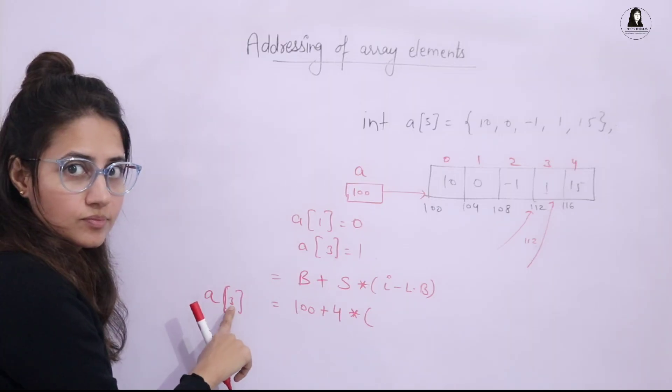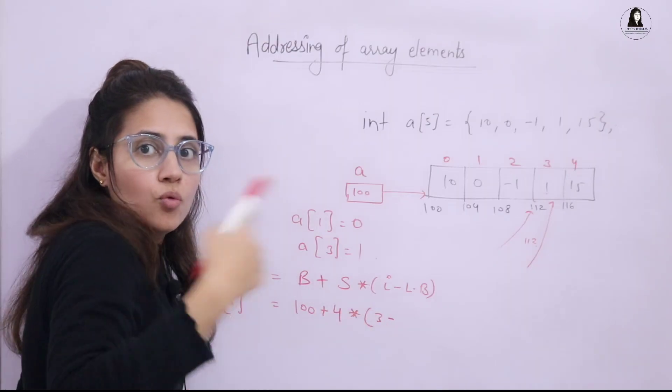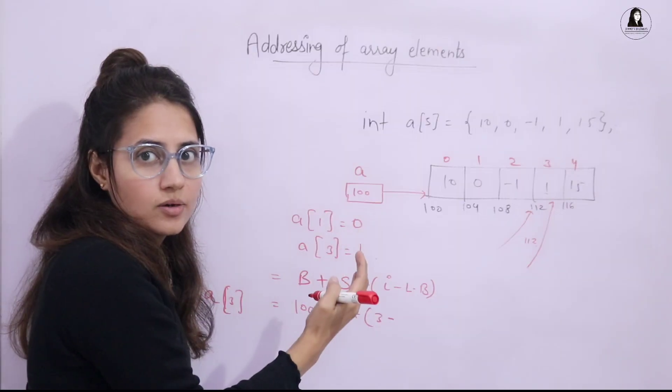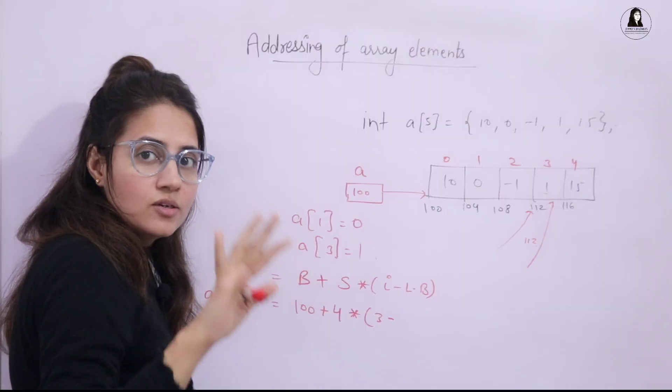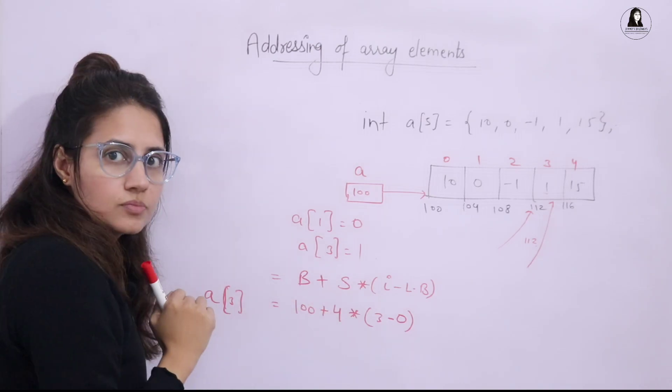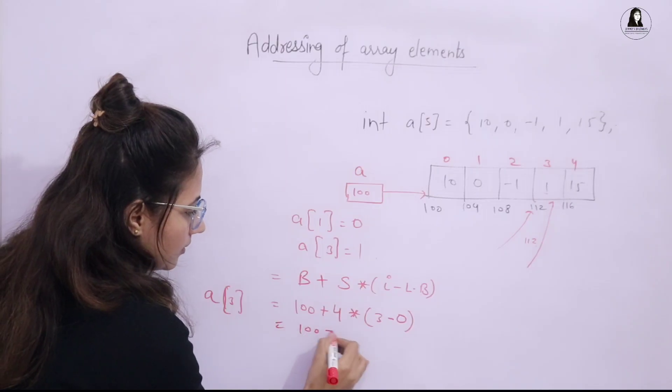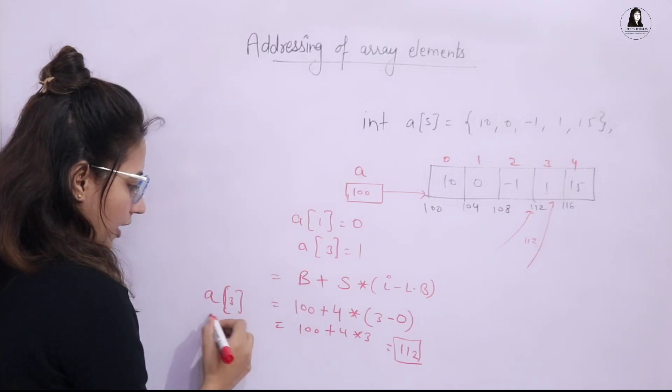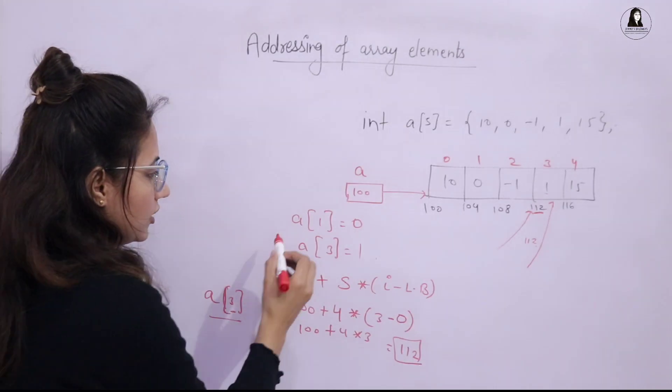Index is 3 because for this I want to calculate the address. So index is 3 minus this LB is what? Lower bound. Lower bound is what? You can say the index of the first element of the array. If no lower bound is given then you have to assume it 0. So lower bound is in this case 0 because no lower bound is given. Now 100 plus 4 into 3. So it is 112 and we know a of 3, this element is at address 112. So this is the simple formula.